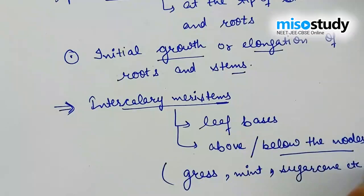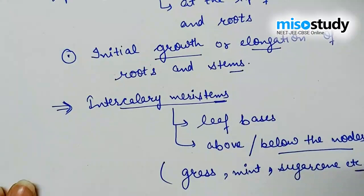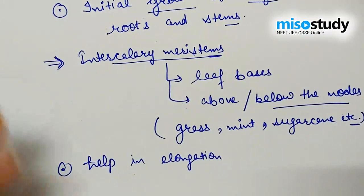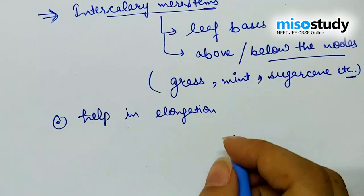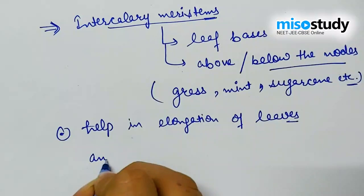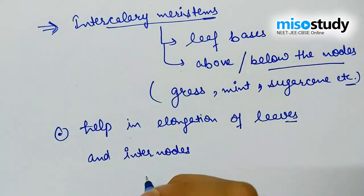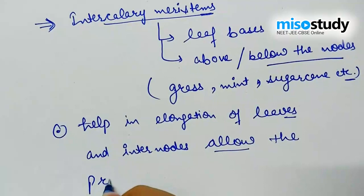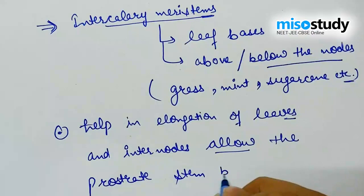Intercalary meristems help in elongation of leaves and internodes and allow the prostrate stem to become erect.